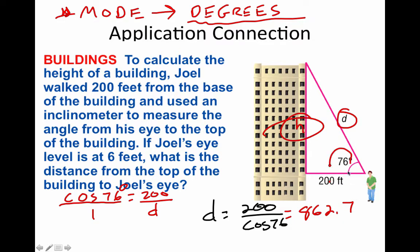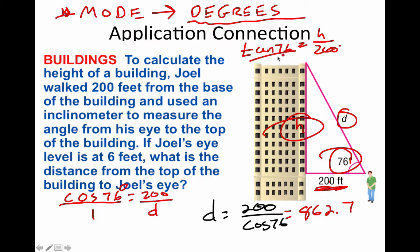We get d ≈ 826.7 feet. To find h, use tangent of 76° = h/200, so h = 200 × tan(76°) ≈ 802 feet. Technically, if you're looking for the full building height, you should add in Joel's eye height of about 6 feet — so read carefully.